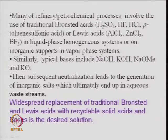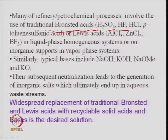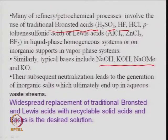Refineries earlier used traditional Brønsted sites — sulfuric acid, hydrofluoric acid, hydrochloride, toluene sulfonic acid — and Lewis type aluminum chloride, zinc chloride. All these are used as strong or Lewis type acid catalysts. They have been tested, but if you can replace them, the problem is that although homogeneous mixture gives better liquid-phase results, separation of catalyst from the mixture requires huge amounts of energy.